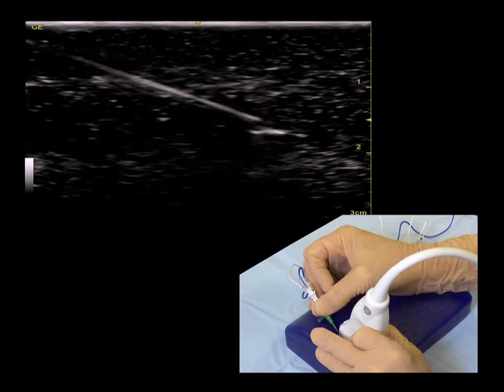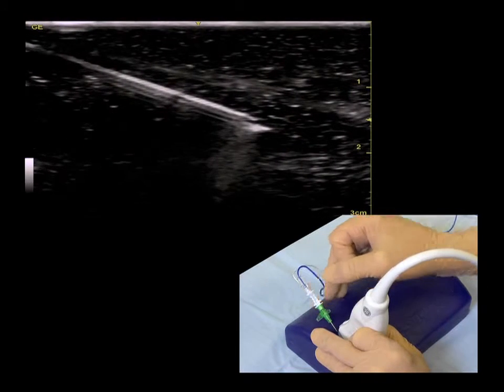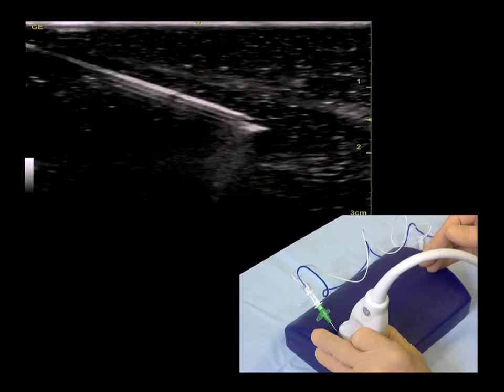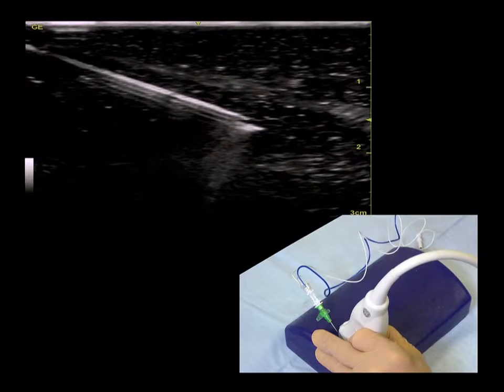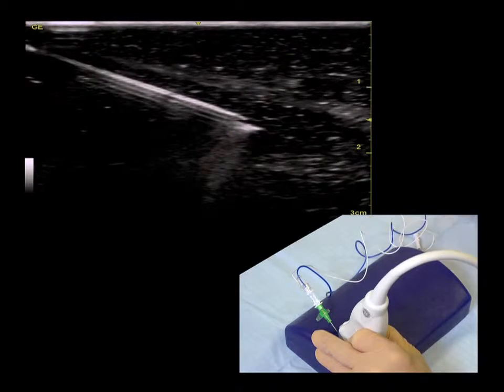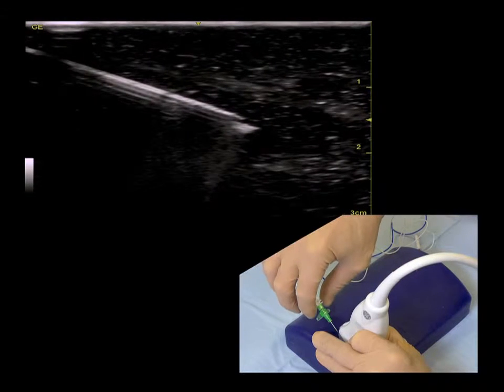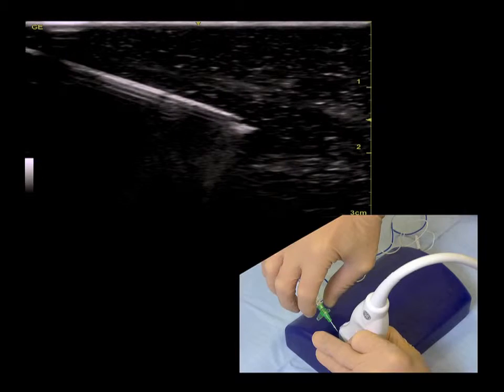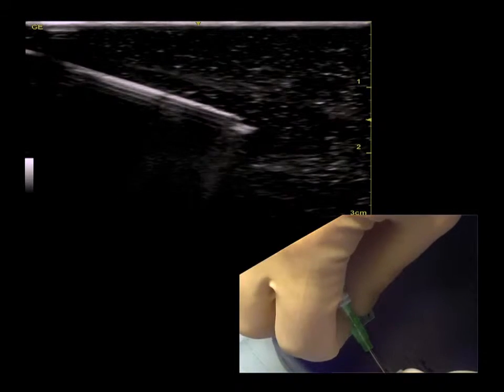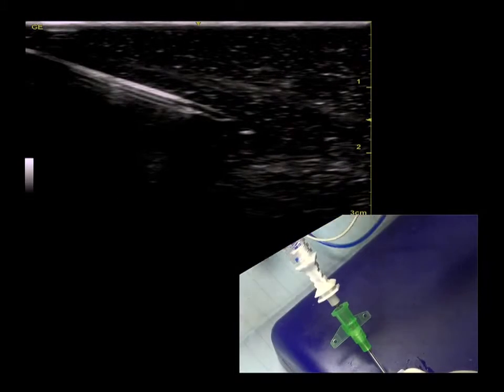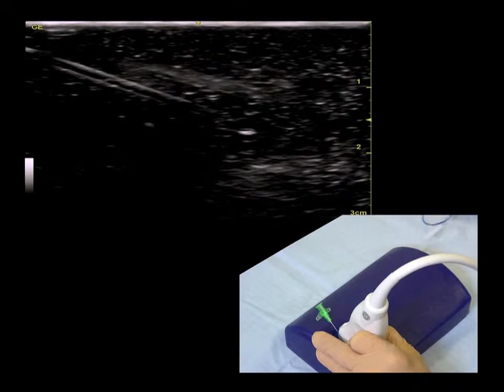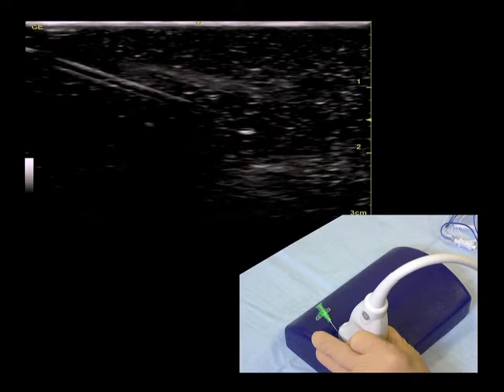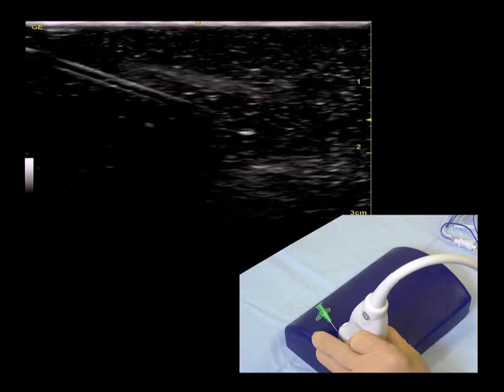Once you are satisfied with the final position of your needle, and you've correctly aspirated and identified your position, you can remove the needle from the sheath. The easiest way to do this is using your thumb and finger to pop the needle out of the sheath. The intrinsic tissue tone will hold onto the sheath and ensure that you get very little movement as the needle is removed from the sheath.